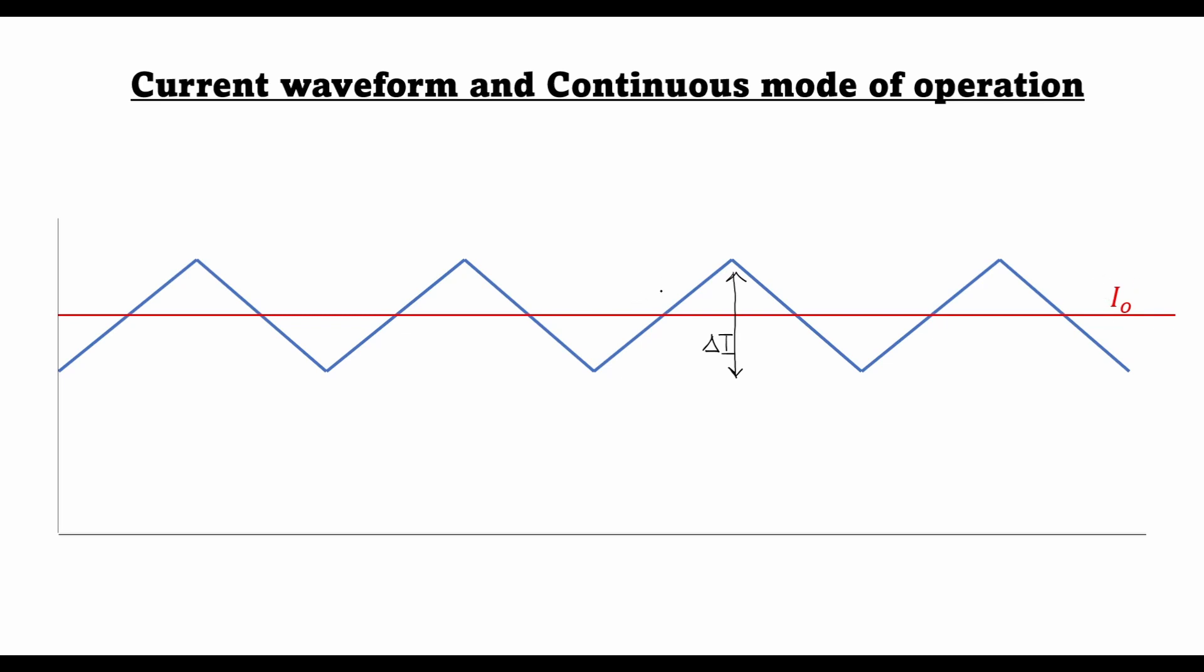During the T on operation, this current increases with the slope of VDC minus V0 over L. During T off, this current decays with a slope of V0 plus 1 divided by L.